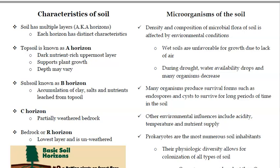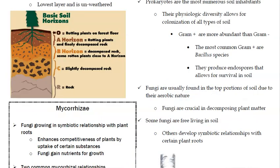Density and composition of soil microbial flora are affected by environmental conditions. Wet soils are unfavorable due to lack of air; during drought, water availability drops and many organisms decrease. Many organisms produce survival forms such as endospores and cysts to survive long periods in the soil until conditions improve. Other influences include acidity, temperature, and nutrient supply. Prokaryotes are the most numerous soil inhabitants; their physiological diversity allows colonization of all soil types. Gram-positive bacteria are more abundant than gram-negative, and the most common gram-positive are Bacillus species, which produce endospores for long-term survival.